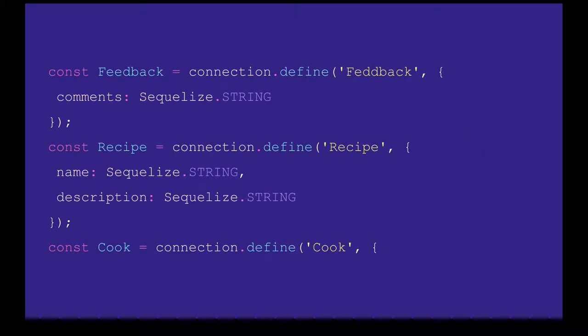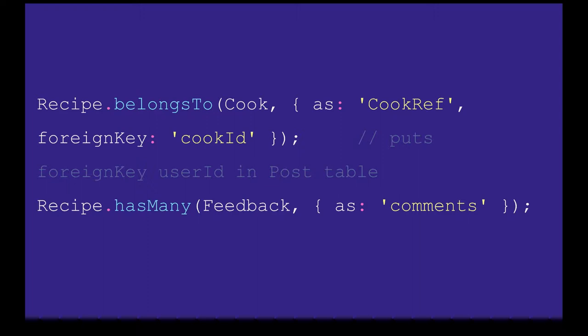We have three tables: feedback, recipes, and cook. A cook has recipes, and a recipe has a lot of feedbacks for that particular cook. We use hasOne and belongsTo to define one-to-one relationships in Sequelize, and hasMany or many-to-many for other relationships. We can also define an alias, like 'cookReference', with a foreign key of cookId.